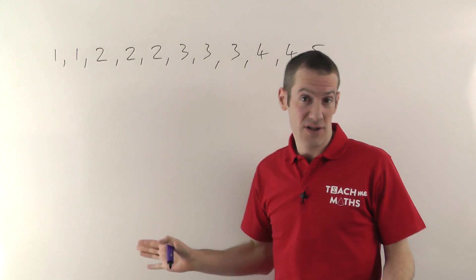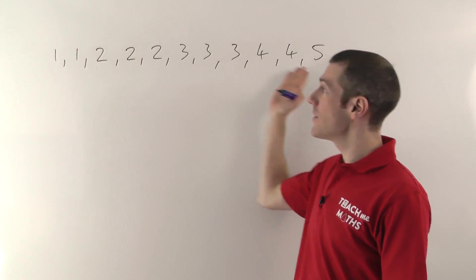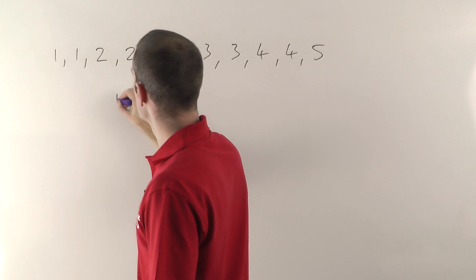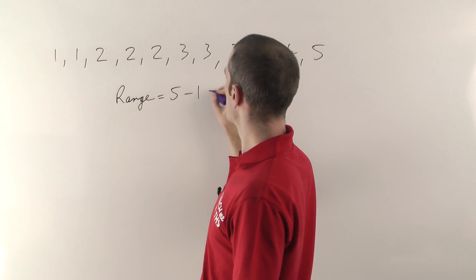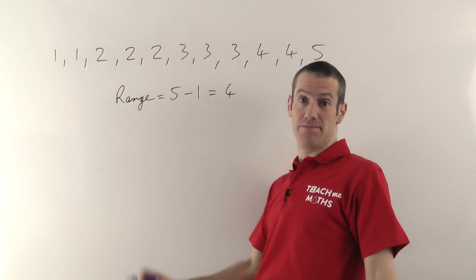Now the range, we'll do that first, that's the easiest one, is simply the highest value minus the lowest value. So the range for this set of numbers is going to be 5 minus 1, so it's 4. That's easy.